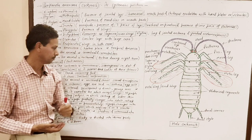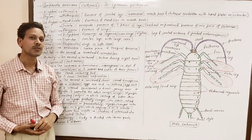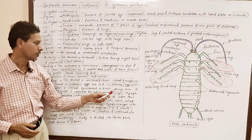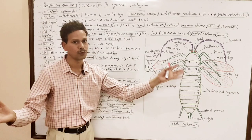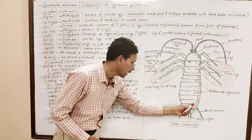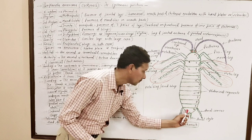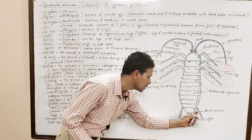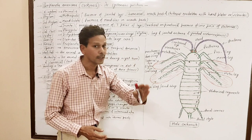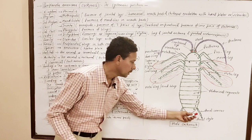Breeding: the animal is unisexual — both sexes are separate. It shows sexual dimorphism — males and females can be distinguished externally. In case of male cockroach, on the 10th abdominal segment, there is a pair of needle-like structures called anal styles. Anal styles are found only in male cockroach; in case of female, these anal styles are absent.